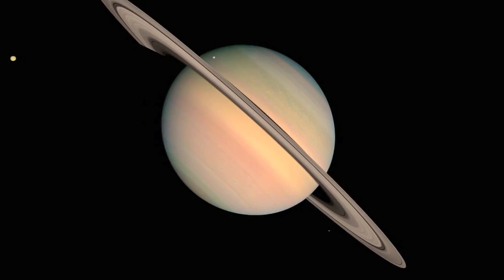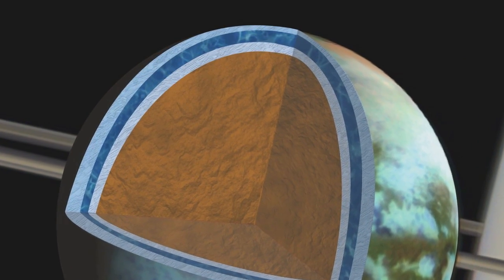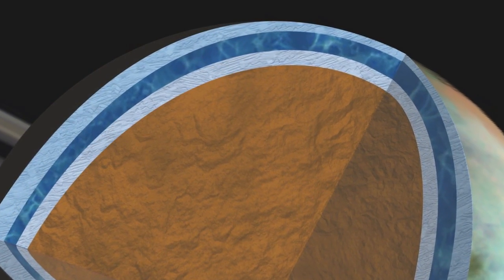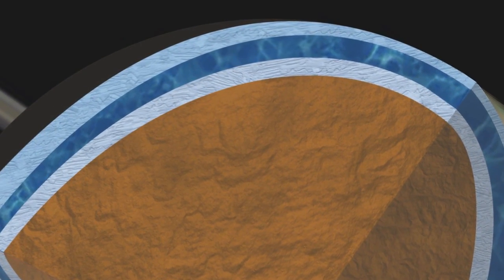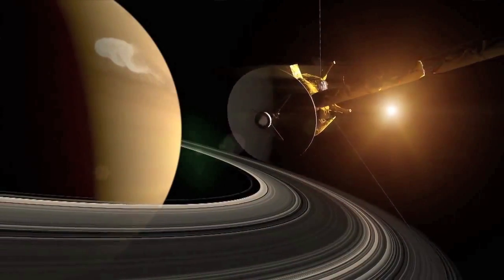This includes brand-new evidence that the ocean inside Saturn's largest moon, Titan, may be as salty as the Earth's Dead Sea, and that the moon's icy shell is rigid and in the process of freezing over. These findings could indicate a less-than-habitable environment.